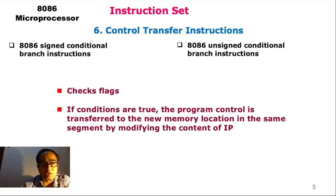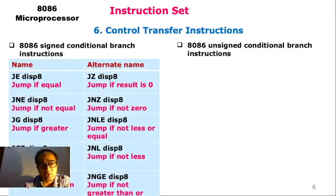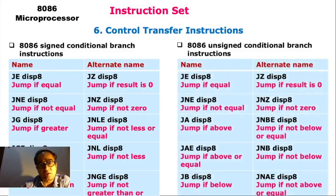Coming to the conditional control transfer instructions — in these instructions we have to first check the flags, and if the conditions are true, the program control is transferred to a new memory location in the same segment by modifying the content of the instruction pointer. The 8086 has both signed control branch instructions and unsigned control branch instructions.